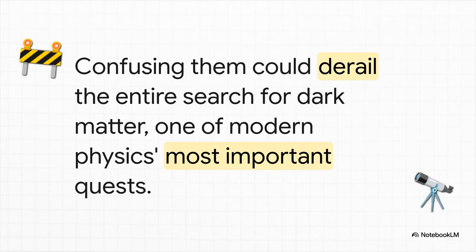And that right there is why this matters so much. If we confuse these two things, we risk sending scientists on a massive wild goose chase. We'd be building these incredibly expensive experiments to look for dim, normal matter, when we should be designing completely new, out-of-the-box methods to find a substance that doesn't care about light at all. It could literally derail the entire hunt for dark matter.